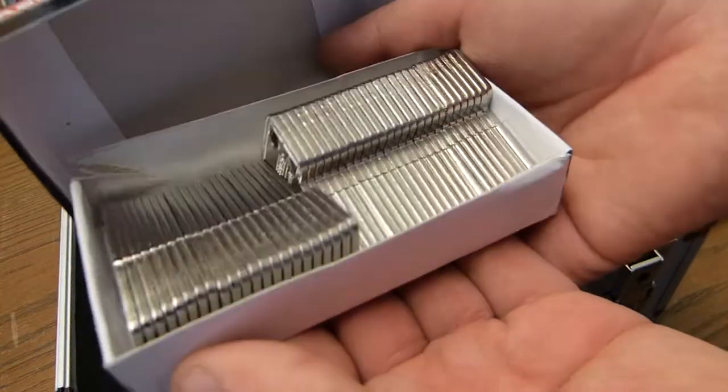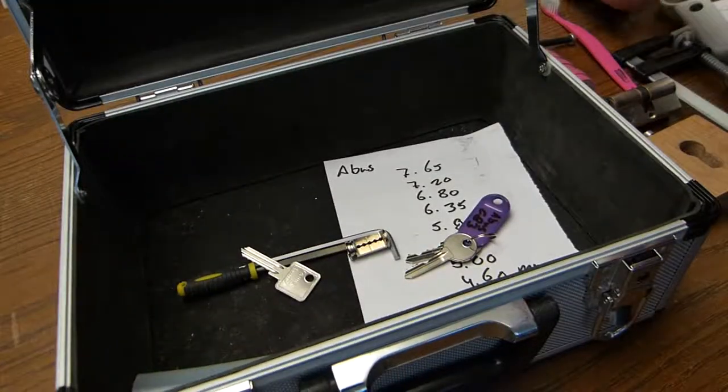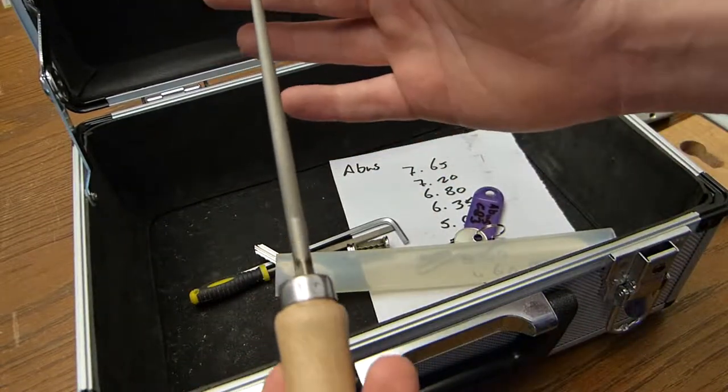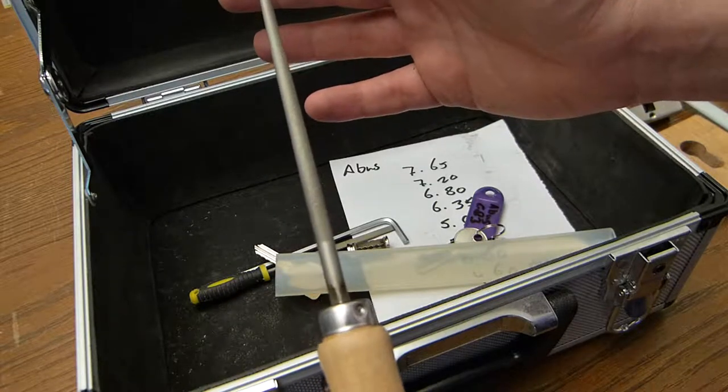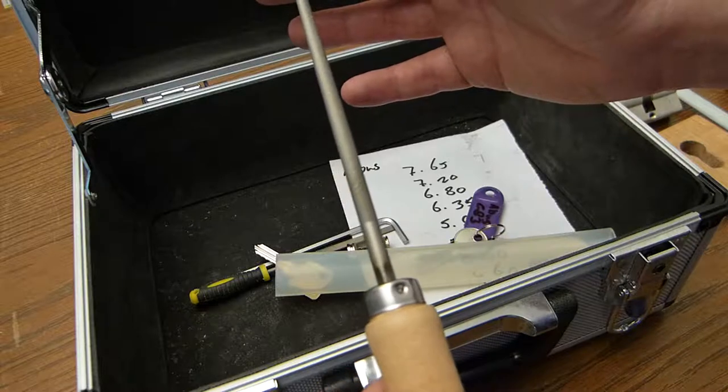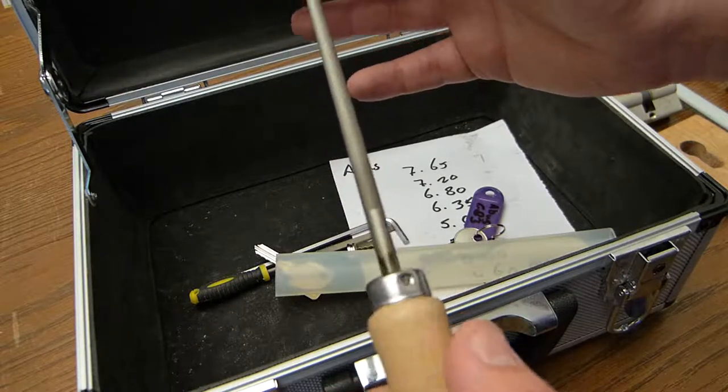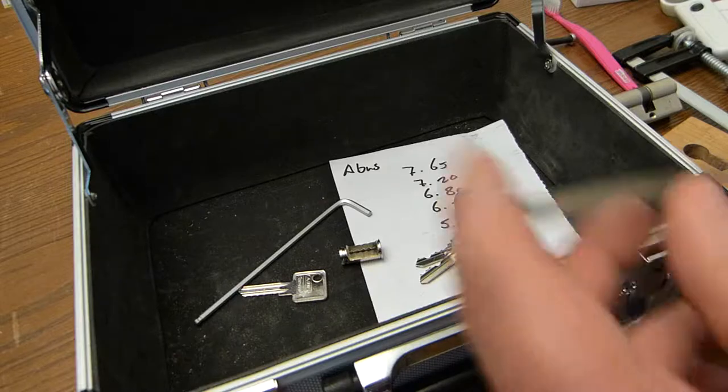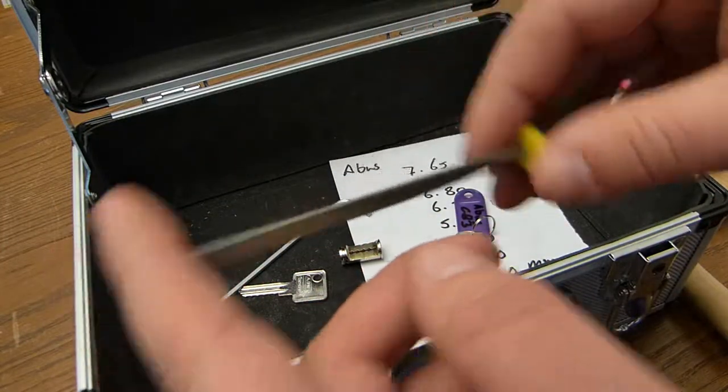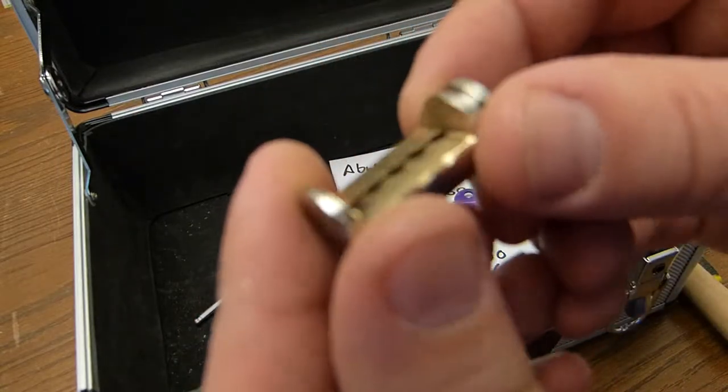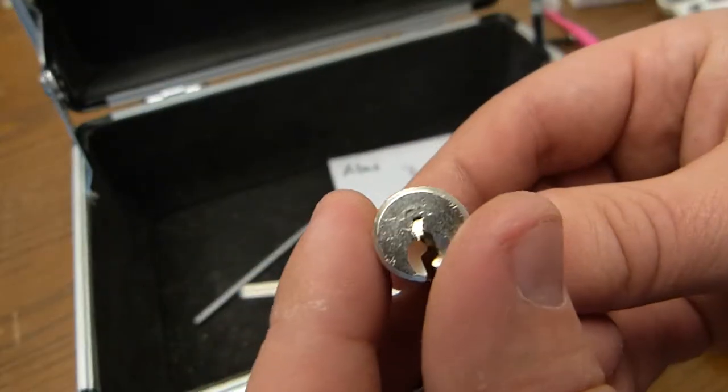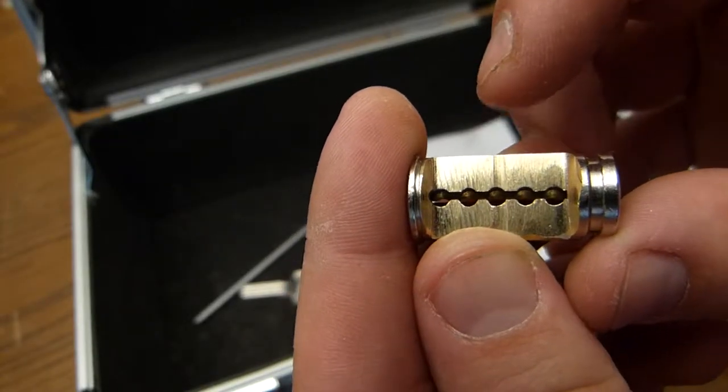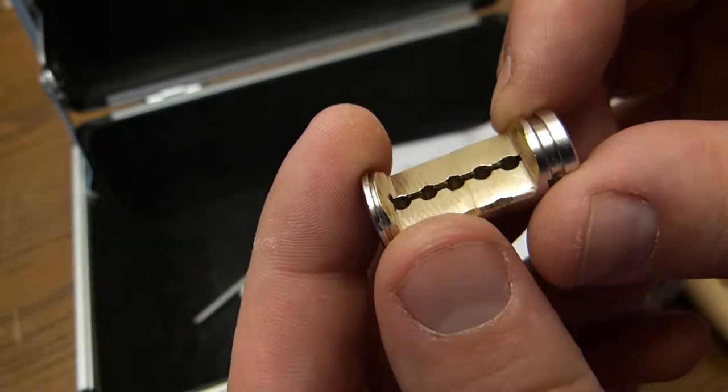One box of key blanks, one file. This is the Vallorbe Swiss Cut 4, it's the preferred impressioning file. And one more file, this is the core, it's ground away. It's used to check the pin positions on the key, it's very useful for identifying the marks.